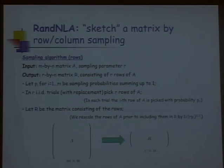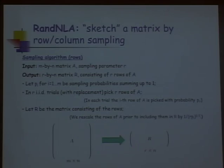The sampling algorithm is a three-liner. The input is an M by N matrix A and a sampling parameter R indicating how many rows to keep. We fix a probability distribution P1 up to P_M over the rows of A, and sample R rows in IID trials — independent, identically distributed — with replacement, so we could sample the same row multiple times. In each trial, a particular row is picked with probability P_i.